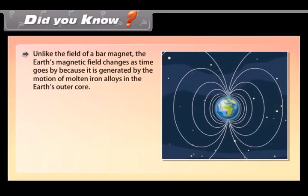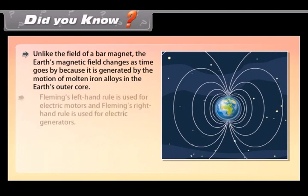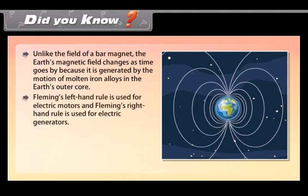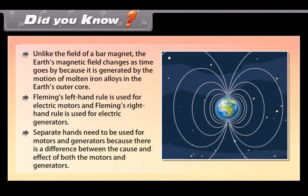Did you know? Unlike the field of a bar magnet, the Earth's magnetic field changes as time goes by because it is generated by the motion of molten iron alloys in the Earth's outer core. Fleming's left-hand rule is used for electric motors and Fleming's right-hand rule is used for electric generators. Separate hands need to be used for motors and generators because there is a difference between the cause and effect of both the motors and generators.